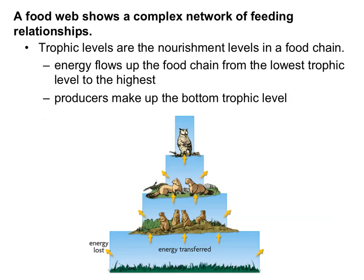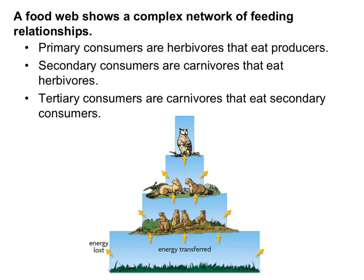Trophic levels are the nourishment levels in a food chain. Energy flows up the food chain from the lowest trophic level to the highest, with producers always making up the bottom trophic level. Primary consumers are herbivores that eat producers. Secondary consumers are carnivores that eat herbivores, and tertiary consumers are carnivores that eat secondary consumers. Looking at our pyramid: the grasses are producers, prairie dogs that eat them are primary consumers, weasels that eat the prairie dogs are secondary consumers, and the owl that eats the weasels is a tertiary consumer.